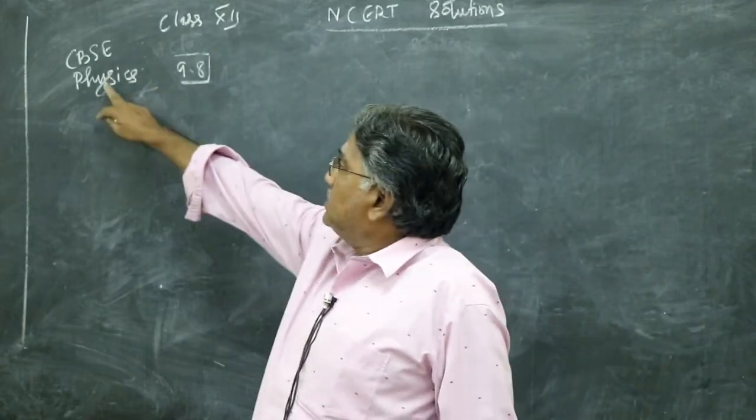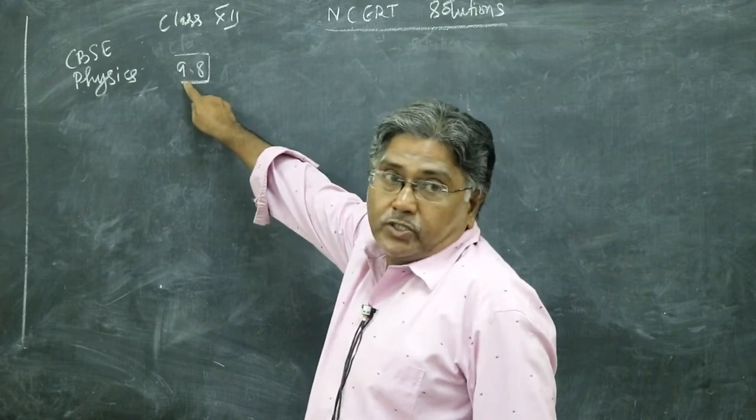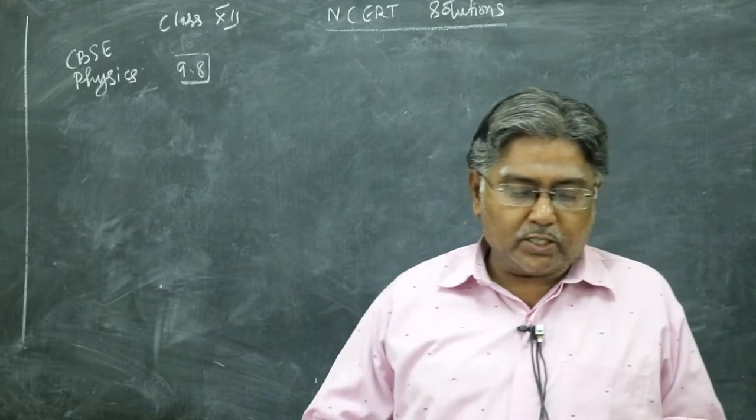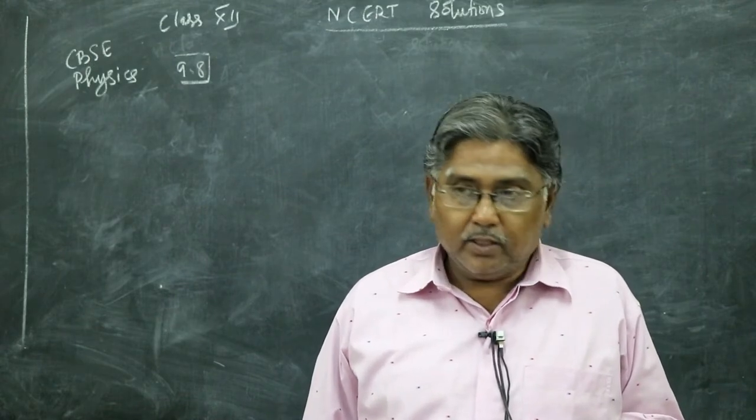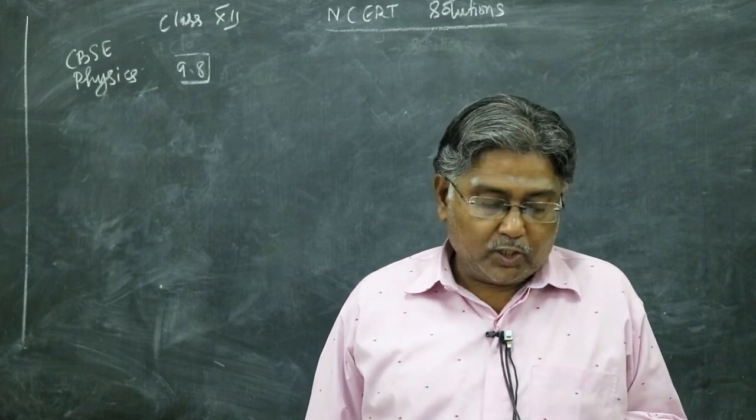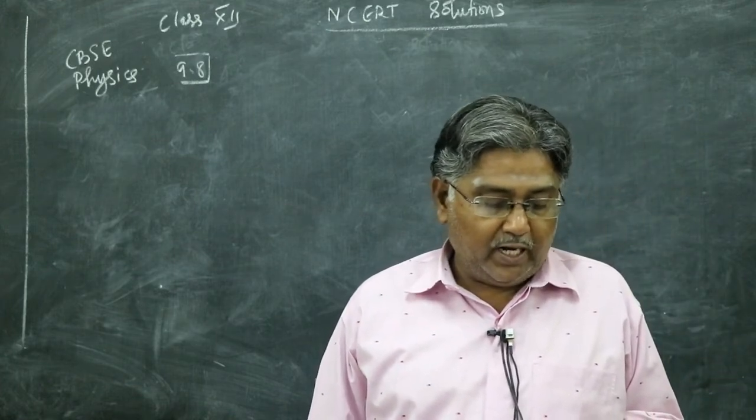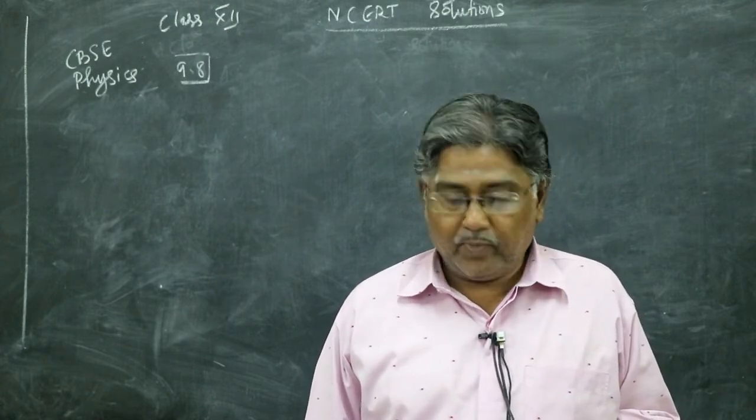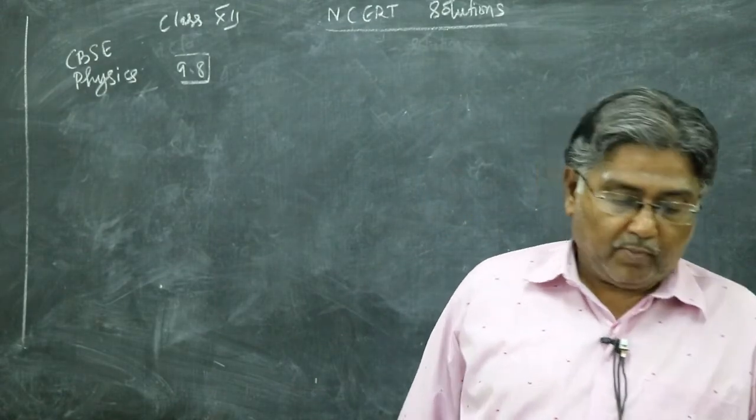Class 12 CBSE physics NCERT solutions exercise 9.8. This is a question: a beam of light converges at a point P. Now a lens is placed in the path of the convergent beam, 12 centimeter from P. At what point does the beam converge if the lens is: (a) convex lens of focal length 20 centimeter, and (b) concave lens of focal length 16 centimeter?